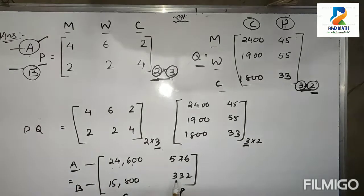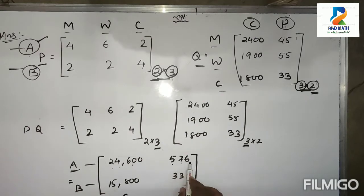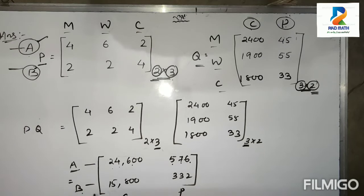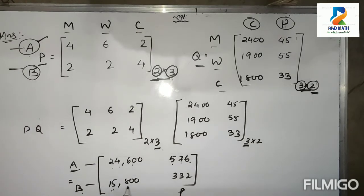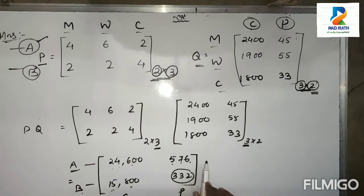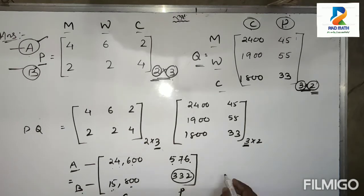Family A's calorie is 24,600 and protein is 576. Family B's calorie and protein are 15,800 and 332 respectively. This is the answer. Pause the video to write it down.